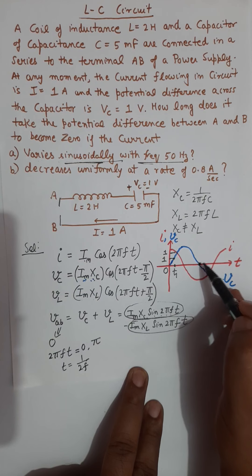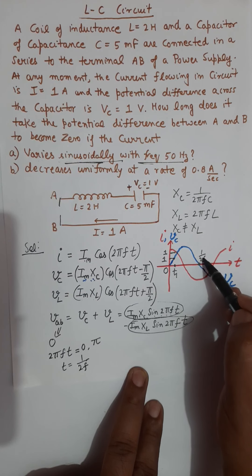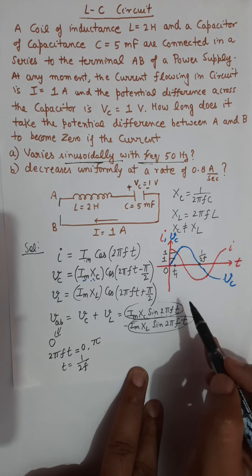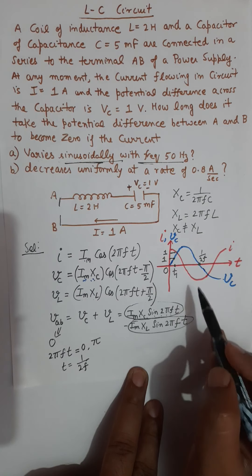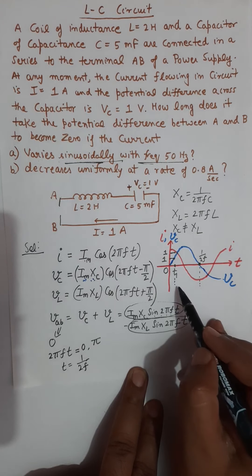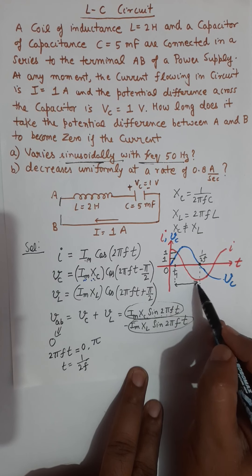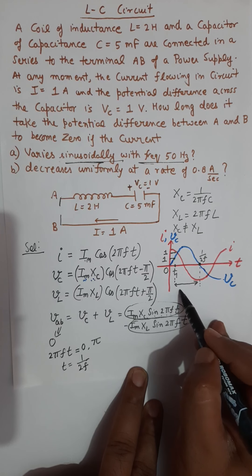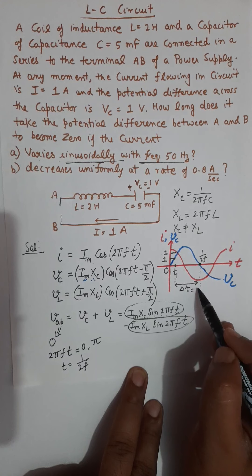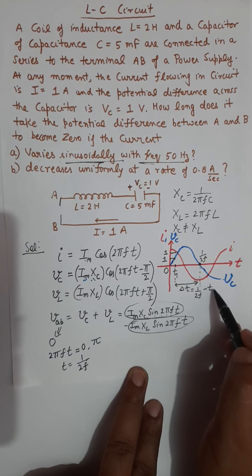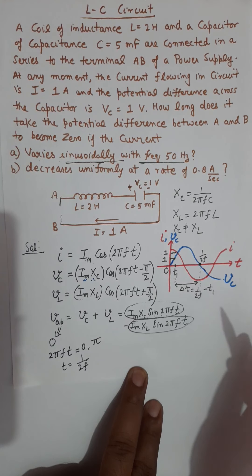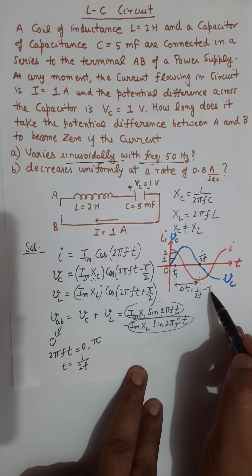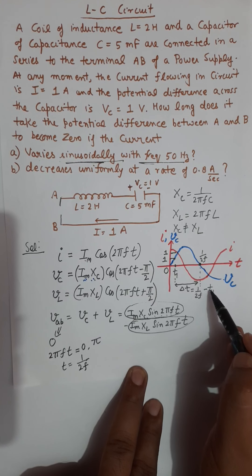This moment is 1 over 2f. The question demands you want this value of time as your answer. So your answer is 1/2f minus t1, and now the target is to find the value of t1.